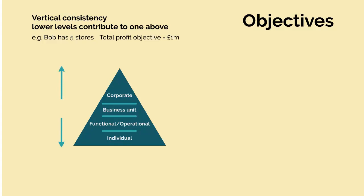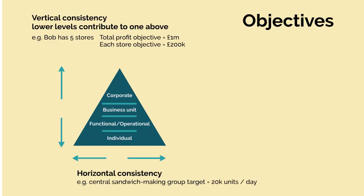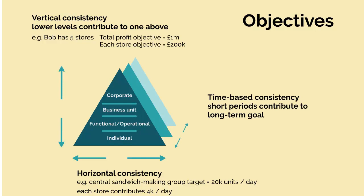So let's say Bob has five stores. If the total profit objective is £1 million, then each store's objective has to be £200,000. Next, we have horizontal consistency of objectives — that means the objectives of different departments, individuals or businesses within the corporate structure should be consistent with each other, and that enables coordination within the organisation. For example, if Bob's central sandwich-making group's target is 20,000 units per day, then each store has to contribute 4,000 a day. We also have time-based consistency, meaning short periods contribute to a long-term goal — so your six-month target of £500,000 contributes to your one-year target of £1 million.